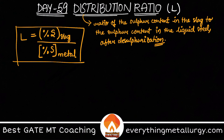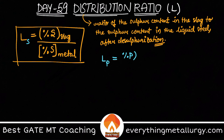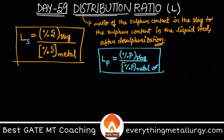Similarly for dephosphorization, we write Ls for sulfur and Lp for phosphorus. Lp equals the percentage of phosphorus in slag divided by the percentage of phosphorus in the metal after dephosphorization. Remember: many people get confused whether to use the initial or final percentage, but it is always the final percentage after the treatment — that's what makes this distribution ratio explain how efficient your process is.